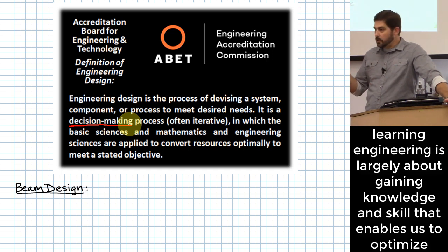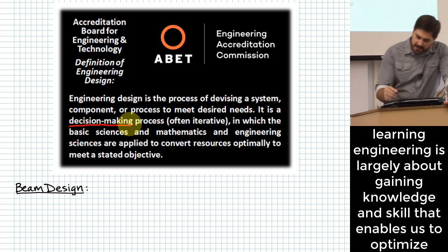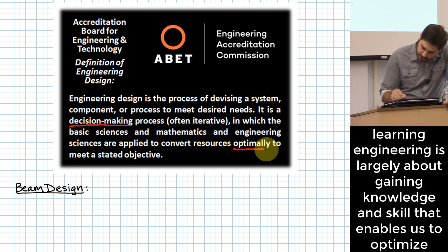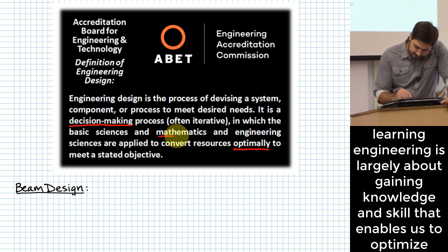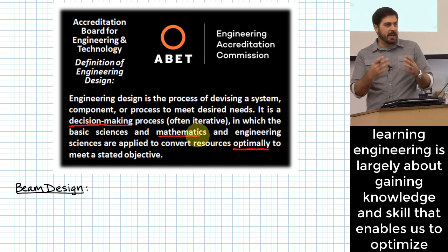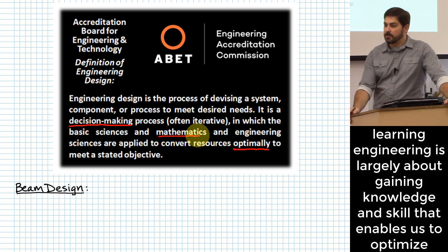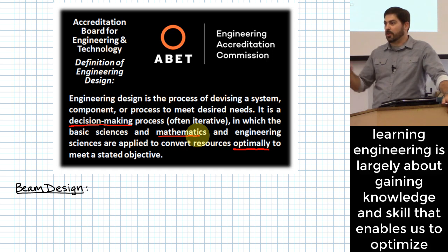What makes you different as an engineer is that when you start approaching a problem, you have another layer you can go through after you have your main idea. This relates to the word 'optimally' in the definition — that is why we need so much math. If we're trying to optimize, it involves knowing all the possibilities and having a criterion to decide what the best choice is.